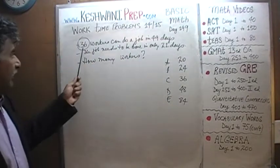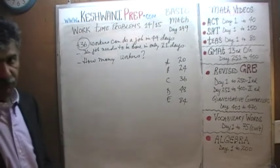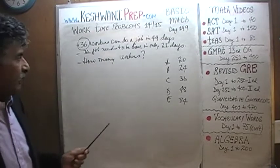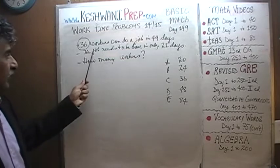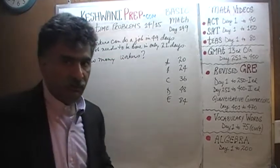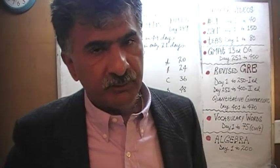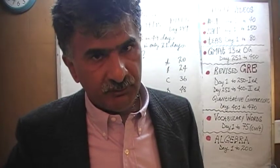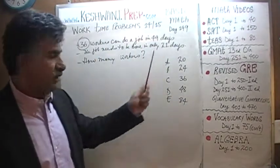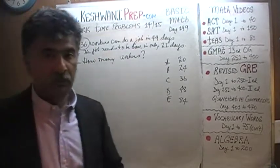We are told that 36 workers can do a job in 49 days. The problem is we do not have 49 days — the job needs to be done in 21 days. We have gotten the contract, and the contract stipulates that we finish the job in three weeks' time. We don't have the luxury of taking as long as 49 days. The question is: how many workers do I need to put on the job?